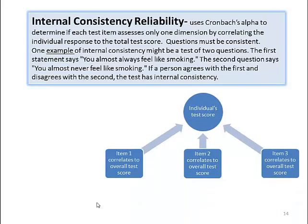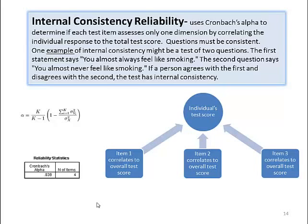So we correlate individual test item scores to the overall test score. Here is the statistical calculation of Cronbach's alpha, where k is equal to the number of subjects in your study. And here is the SPSS output — aren't you glad that you have SPSS rather than having to compute these statistics by hand? An alpha of 0.7 or greater is acceptable.